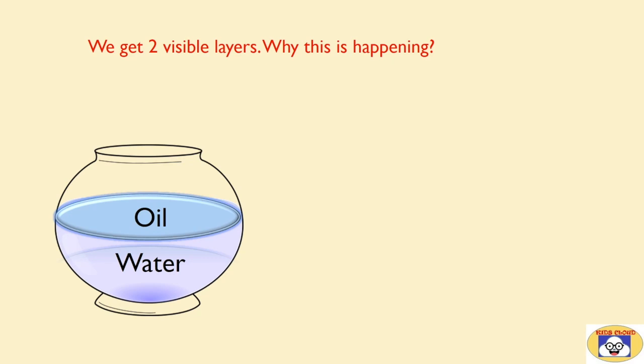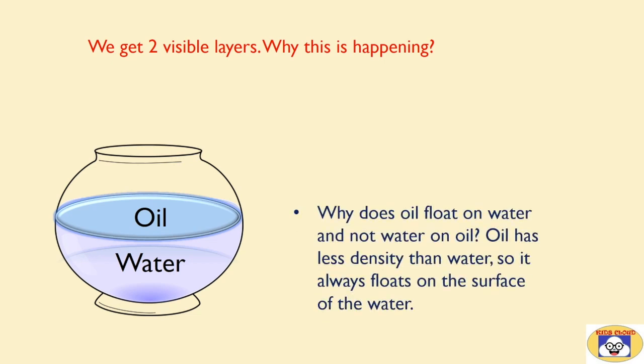After a while we get two visible layers. Why is this happening? When you add oil to water, the two don't mix with each other. We can see the water layer at the bottom and oil layer at the top.